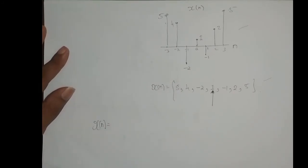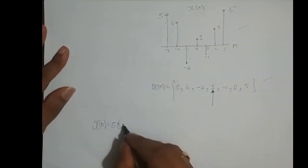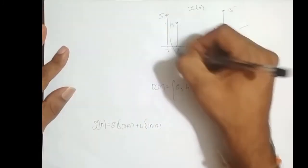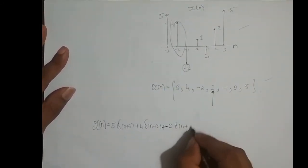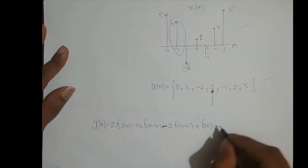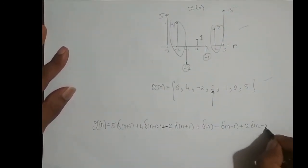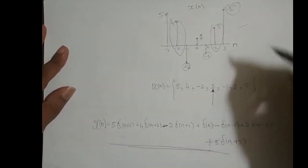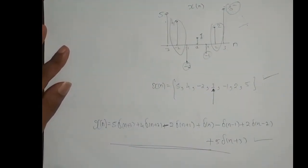I can also represent this in terms of the delta function, as discussed in the previous video. It is 5 times delta(n+3), shifted left 3 times, plus 4 times delta(n+2), minus 2 times delta(n+1) — because that amplitude is minus 2 — plus delta(n), meaning the sample at n equal to 0 has amplitude 1, minus delta(n-1) — because it is minus 1 — plus 2 times delta(n-2), plus 5 times delta(n-3), shifted right 3 times. So I can represent the discrete time sequence graphically, or as a sequence notation, or in terms of delta functions.